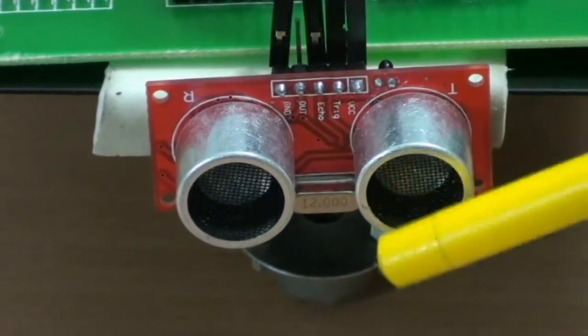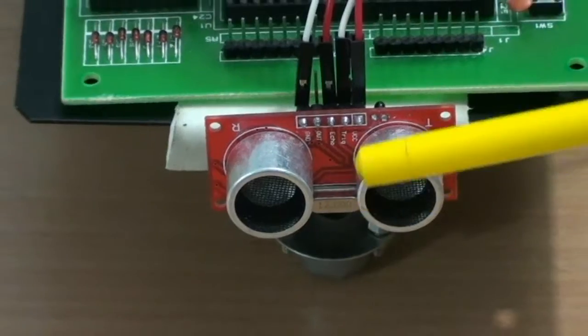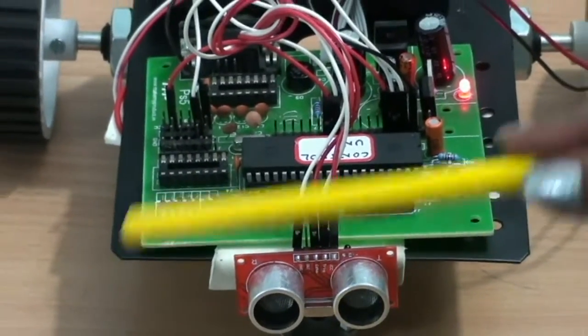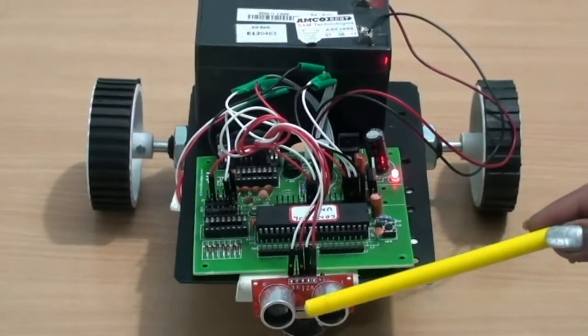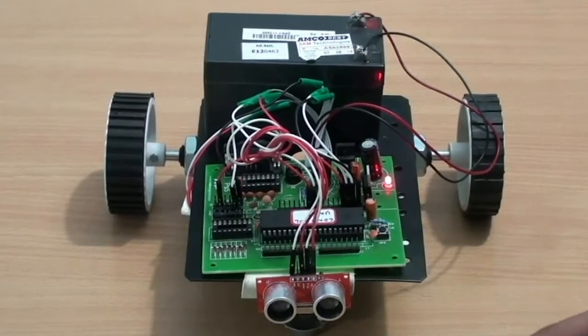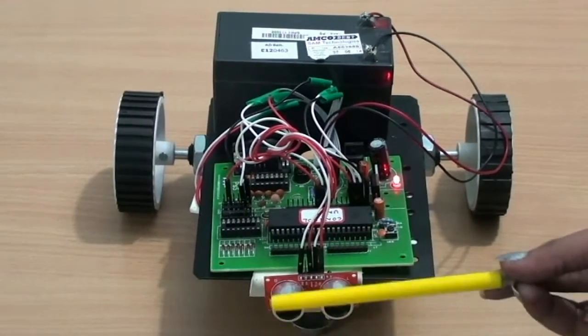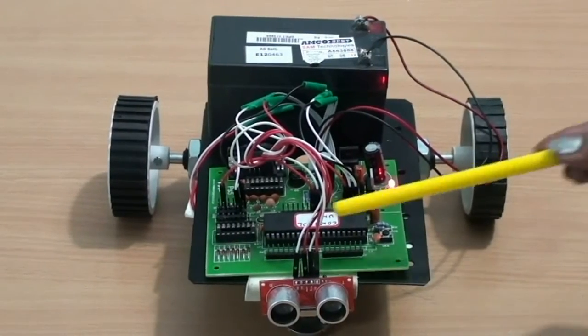The ultrasonic sensor monitors the time taken by the waves to come back after the transmission, and this time taken is proportional to the distance of the obstacle. This is how this sensor works, and the obstacle found is sent through the eco pins which makes the robot choose the new path.